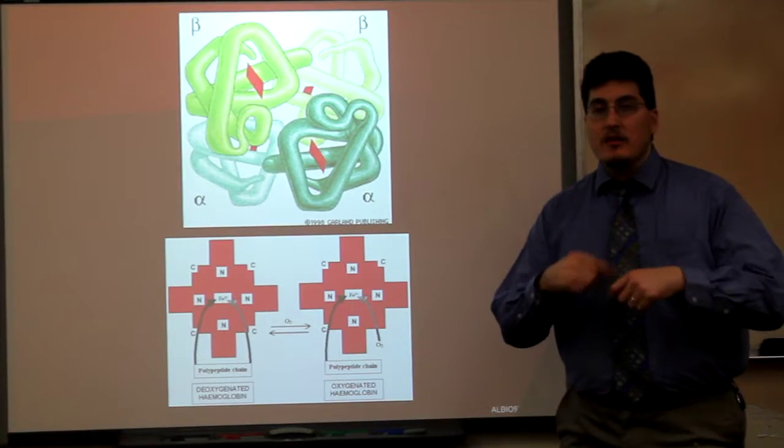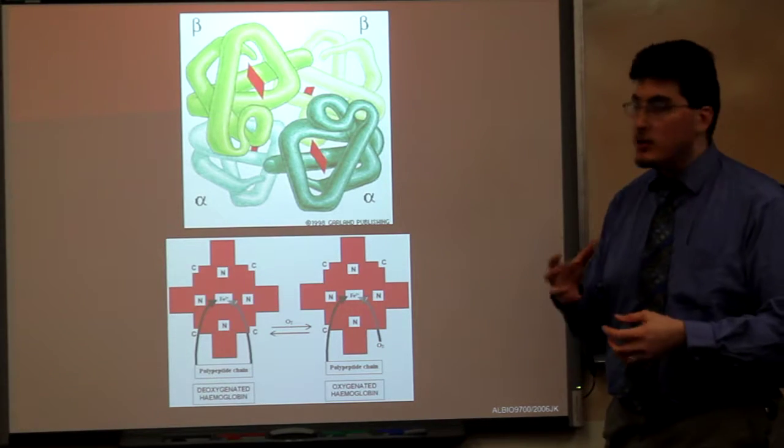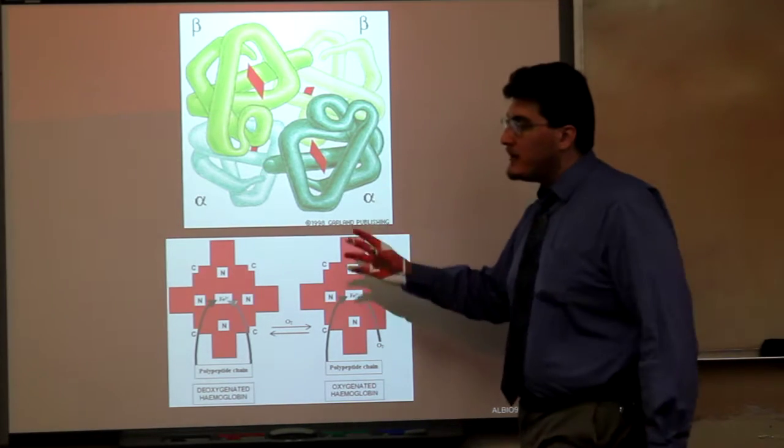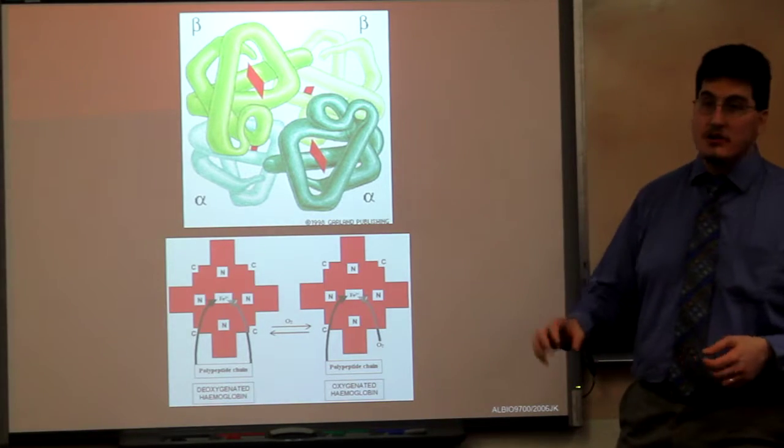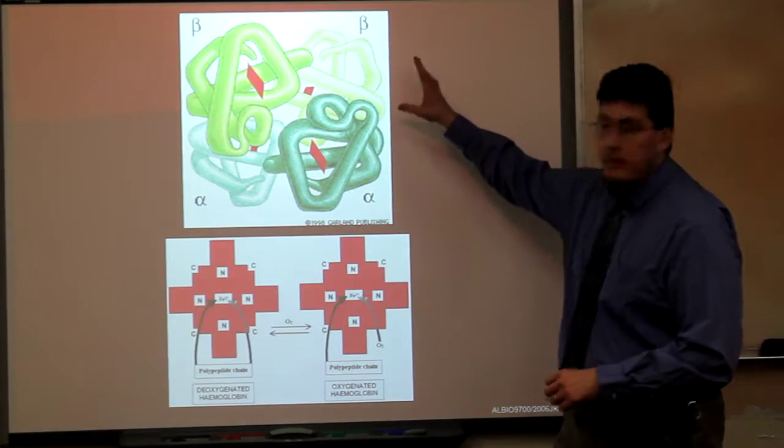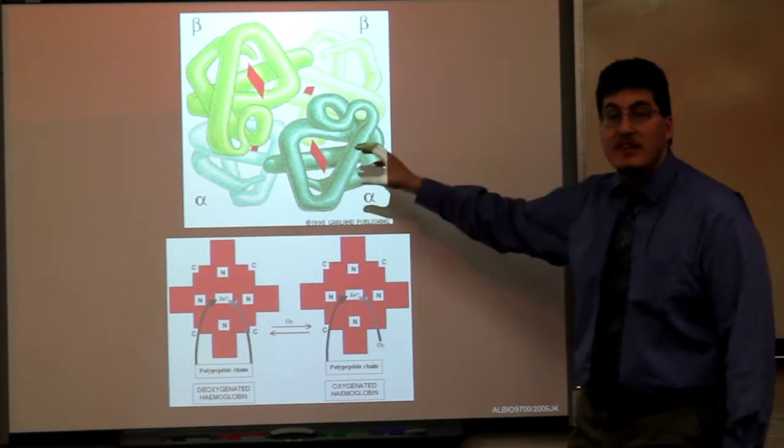We're going to start talking about gas exchange by reviewing the structure of hemoglobin. Remember that hemoglobin from unit one is a quaternary polypeptide structure. It consists of four polypeptide chains, each of which has a heme prosthetic group.